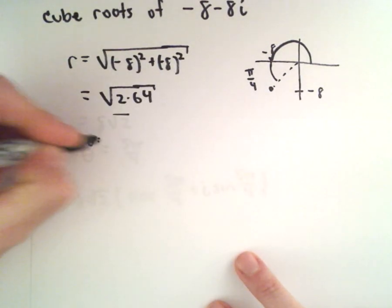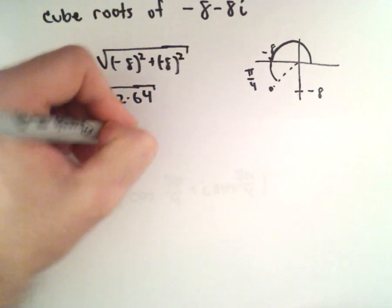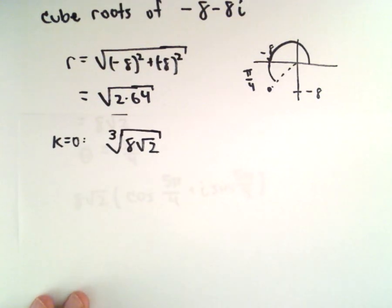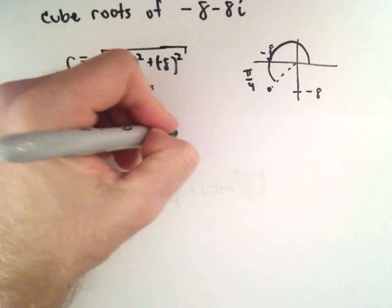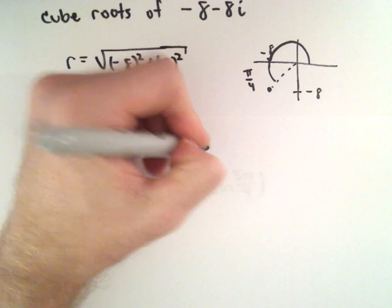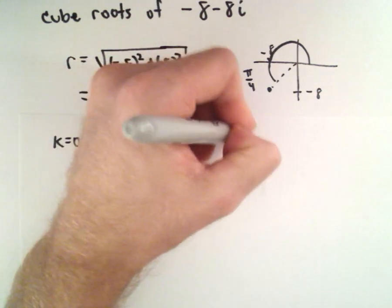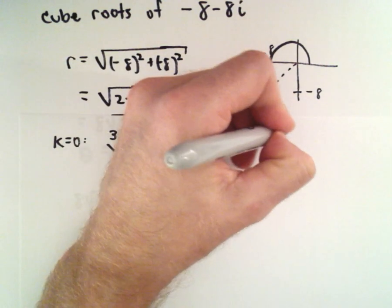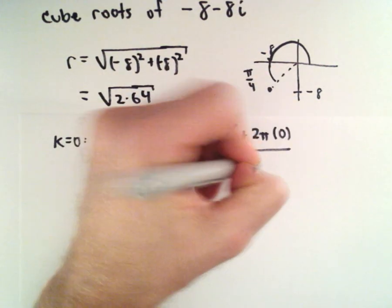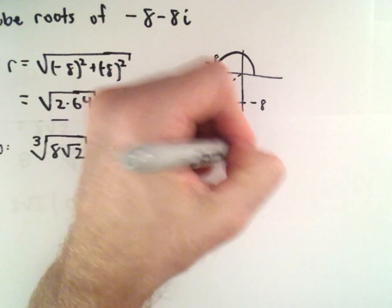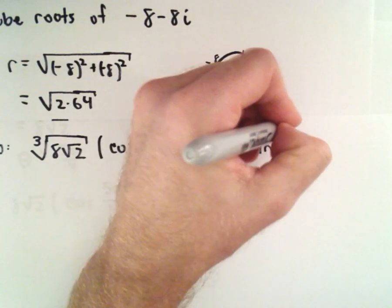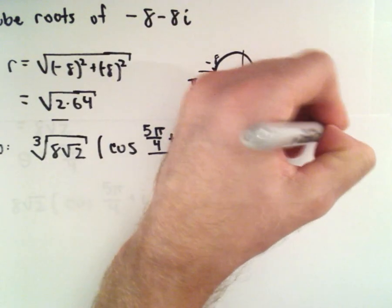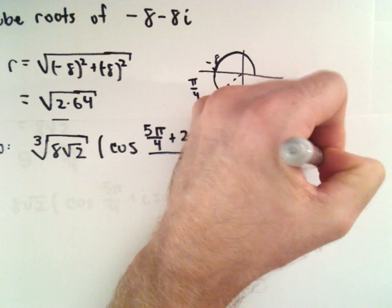If k equals 0, we've got to take the cube root of our r value, which is 8 times root 2. Then we'll have cosine of our theta value, which is 5 pi over 4, and we'll add 2 pi times k — which in this case is 0 — all over 3. Then we add i times sine of 5 pi over 4 plus 2 pi times 0, again all over 3.